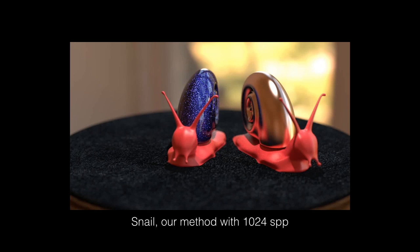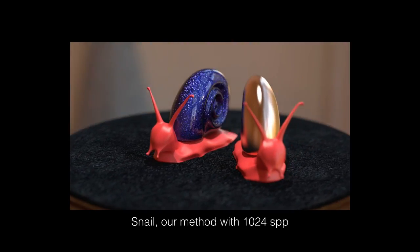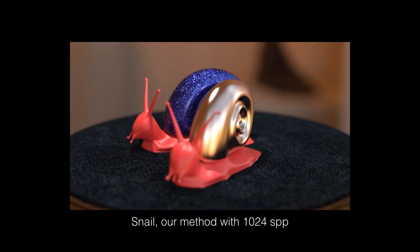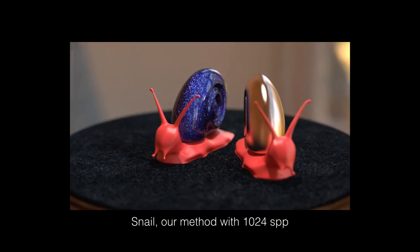In this example, the left snail shell is composed of high-frequency, randomly distributed oriented microflakes. However, note how smooth the indirect reflection of this surface appears off the right snail's glossy shell.